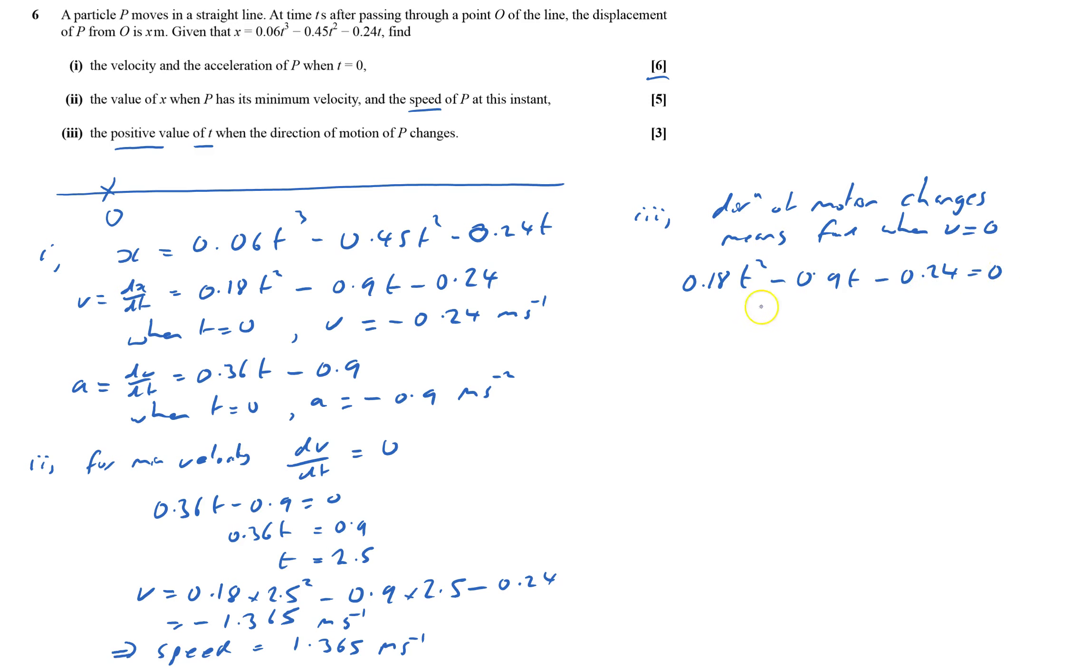So I've got 0.18t squared minus 0.9t minus 0.24 equals 0. Hopefully it might factorize. I'll multiply through by 100 just to make it easier. And 3 goes into all of that. So 6t squared minus 30t minus 8 equals 0.